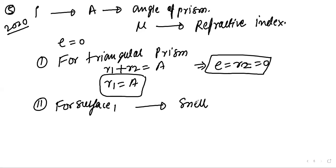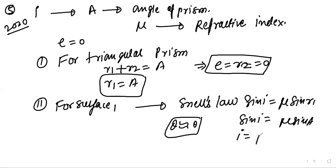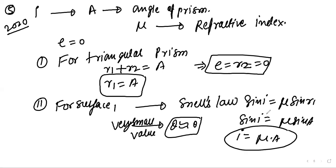Applying Snell's law at surface 1: sin i = mu × sin R1 = mu × sin A. Since the prism angle is very small, we approximate: sin i ≈ i and sin A ≈ A, giving i = mu × A.